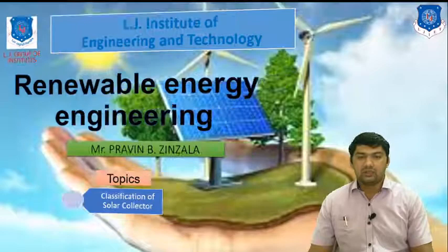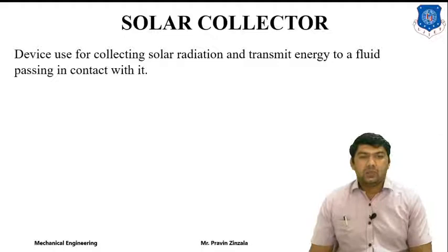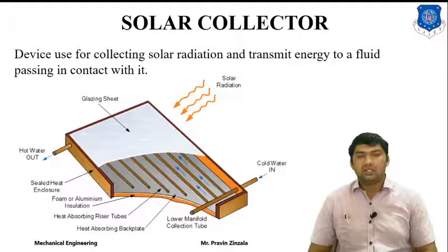First of all, we discuss about what is a collector. A collector is a device used for collecting the solar radiation and transmitting the energy to a fluid passing in contact with it. In the previous session, we also discussed about the different types of solar radiation — direct radiation, diffuse radiation, terrestrial radiation, and extraterrestrial radiation.